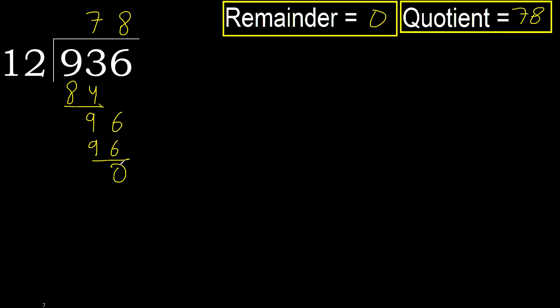Okay. 0. Therefore 936 divided by 12 is 78. There it is.